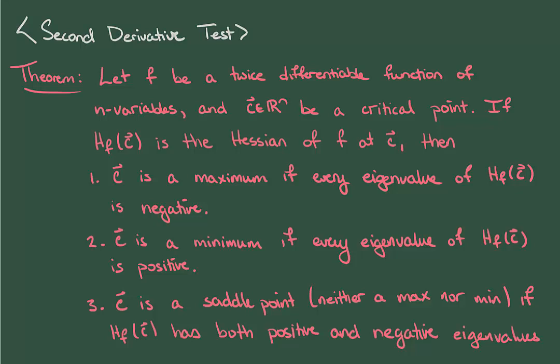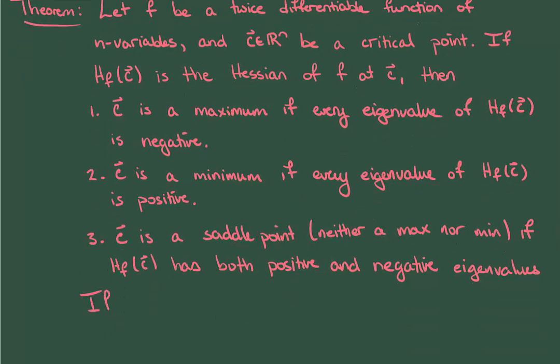This is very similar to the test that we saw in single variable calculus, where a negative second derivative gave a maximum and a positive second derivative gave a minimum. It's just that now we have to look at the eigenvalues of the Hessian matrix. It also turns out that if any of the eigenvalues are zero, well then this test is inconclusive and you don't know anything.